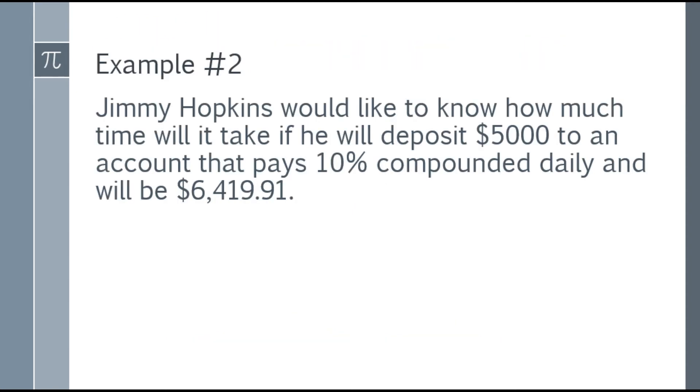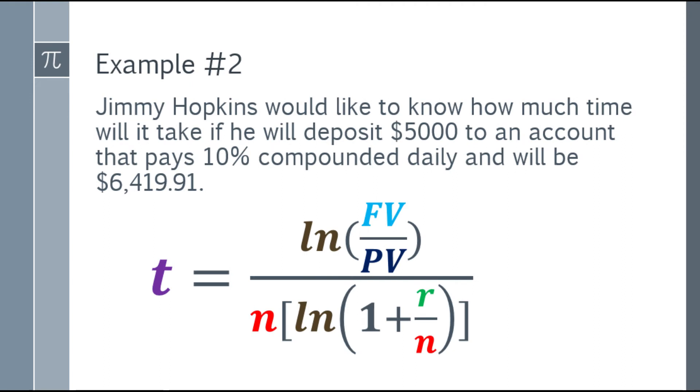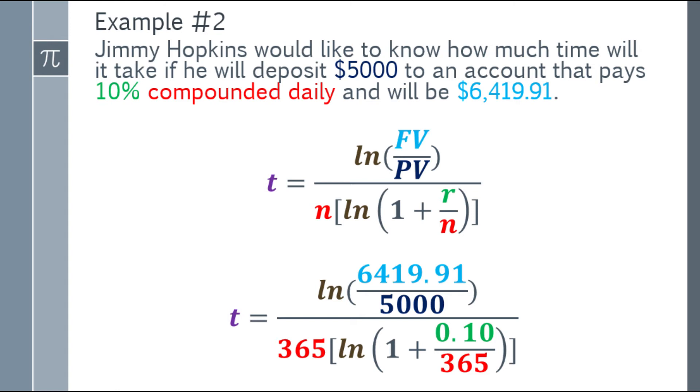Example number 2: Jimmy Hopkins would like to know how much time will it take if he will deposit $5,000 to an account that pays 10% compounded daily and will be $6,419.91. Same question as earlier. You deposit $5,000 and the account pays 10% compounded daily, it will become $6,419.91. How long will you wait for it to become $6,419.91? Let's place the formula, and after that, substitute the values.